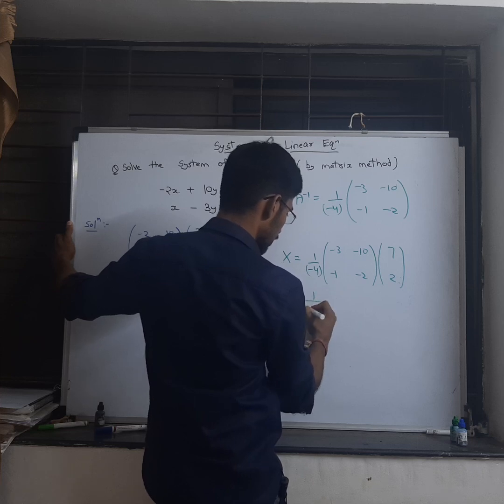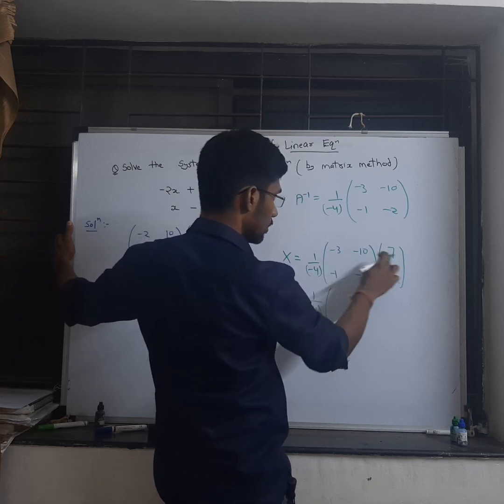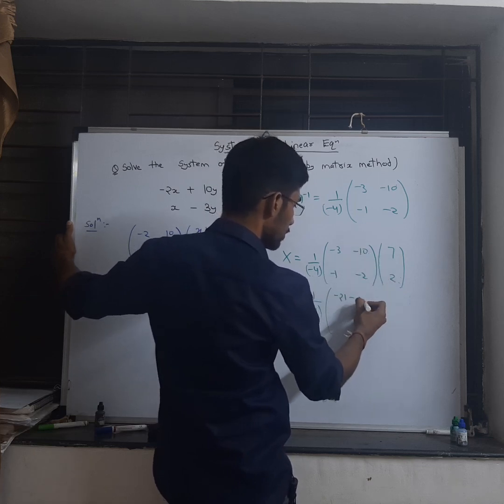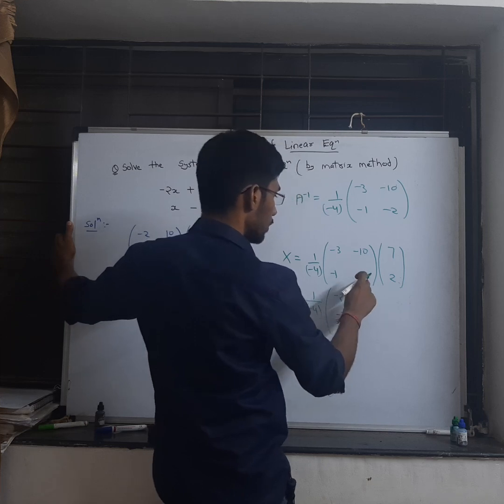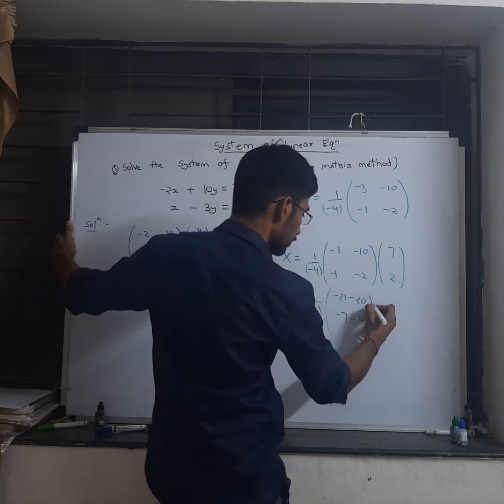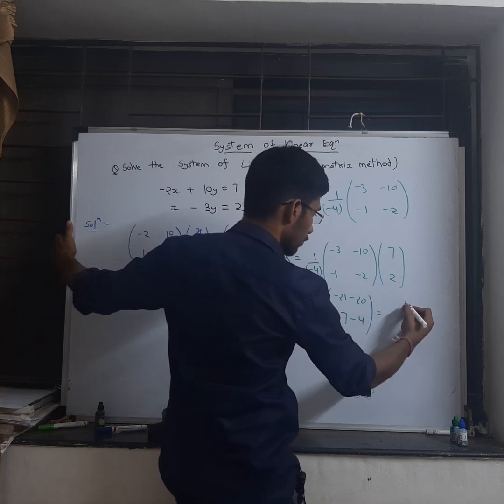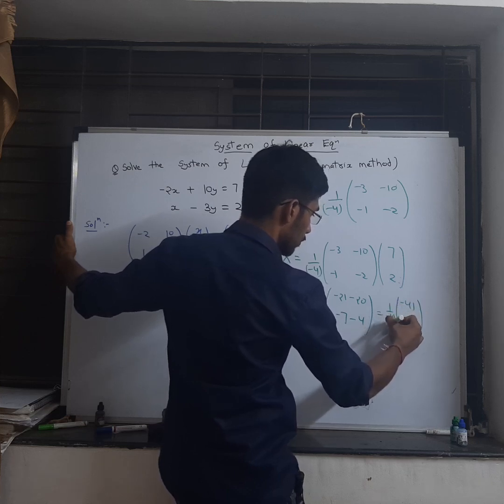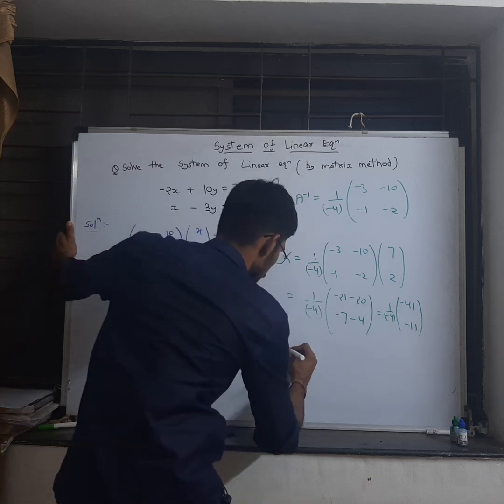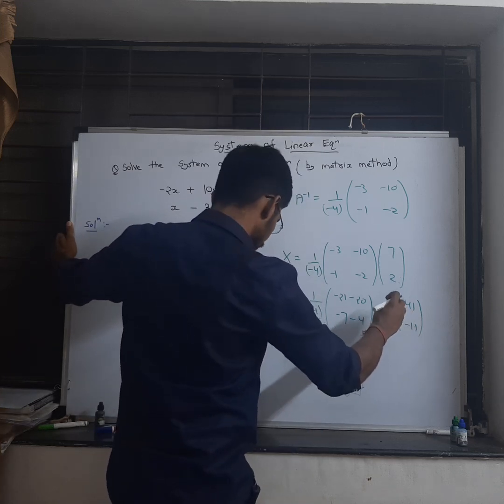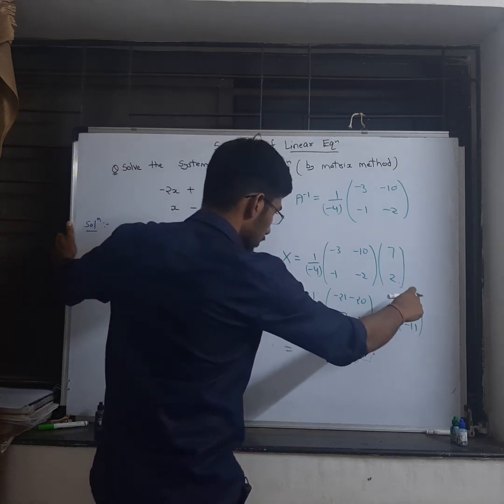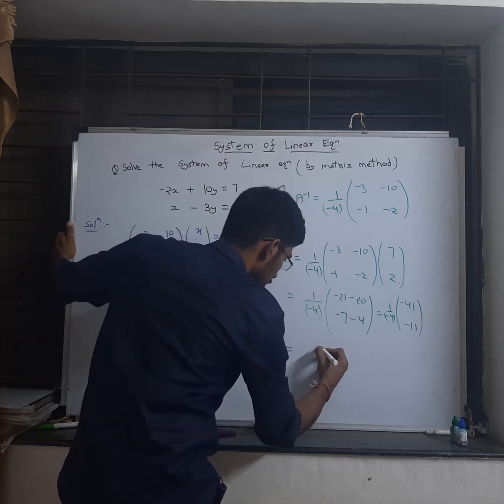So minus 3 times 7 minus 10 times 2 gives minus 21 minus 20 which is minus 41, and minus 1 times 7 minus 2 times 2 gives minus 7 minus 4 which is minus 11, with a factor of minus 1 by 4. Multiplying minus 1 by 4 to the elements of this matrix, I will get 41 by 4 and 11 by 4.